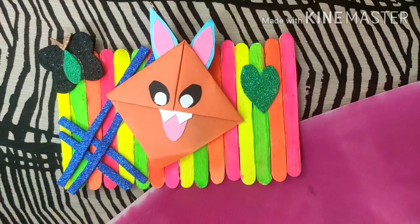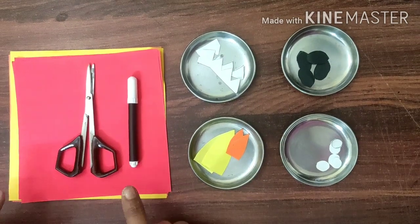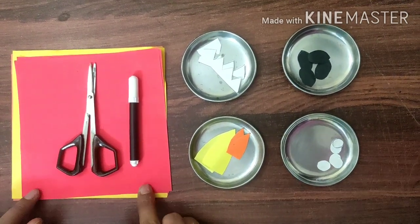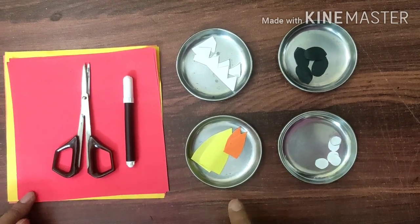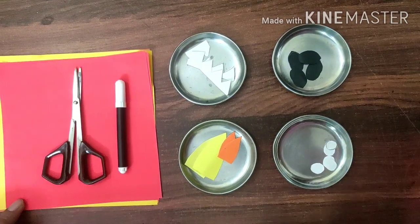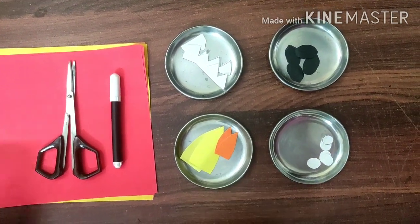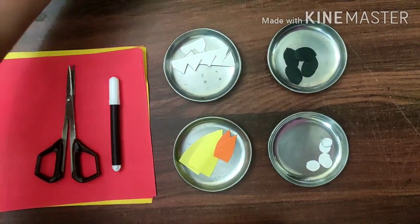Things required for making a bookmark are origami sheets of different colors, scissors, black marker, some cutouts of oval and round shape for eyes, cutouts for ears and teeth, and fabric glue.